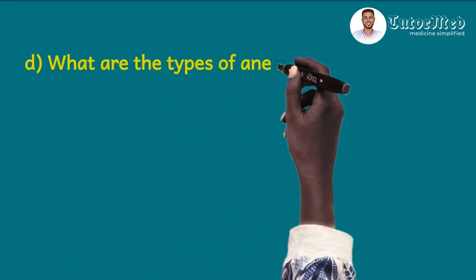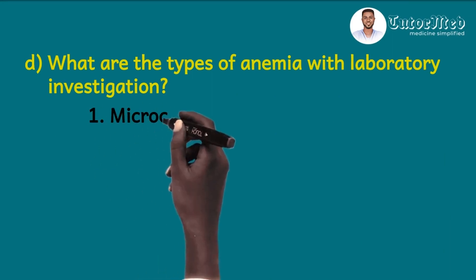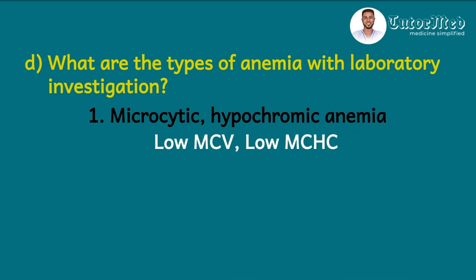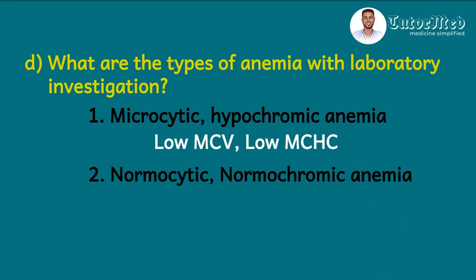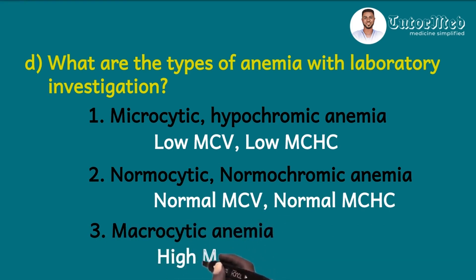The last question asks: what are the types of anemia with laboratory investigation? Per the labs, we have three types. First, microcytic hypochromic anemia, where we have a low MCV and a low MCHC — MCV stands for mean cell volume, MCHC stands for mean cell hemoglobin concentration. Second, normocytic normochromic anemia, where we have a normal MCV and normal MCHC. Third, macrocytic anemia, where we have a high MCV. How to interpret the full blood count has been explained in our full blood count lecture — find the link in the video description below.